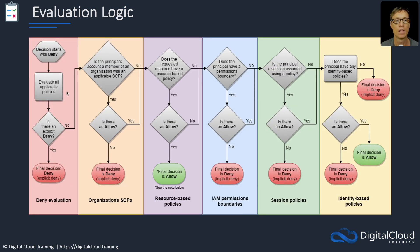Now let's look at the logical flow. Starting in the top left, the decision begins with a deny — that's the implicit deny. We then evaluate all the policies. If there's an explicit deny, straight away the deny decision is final. If there are no denies, it checks whether the principal's account is a member of an AWS Organization with a service control policy — if not, carry on; if yes, it needs to check for an allow. Then it checks whether the requested resource has a resource-based policy — if it doesn't, it moves on; if it does, it checks for an allow, and if there is one, the final decision is allow.